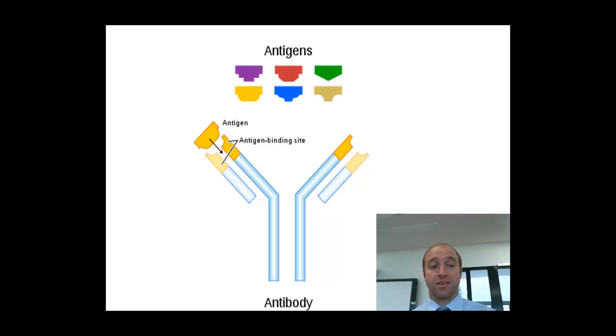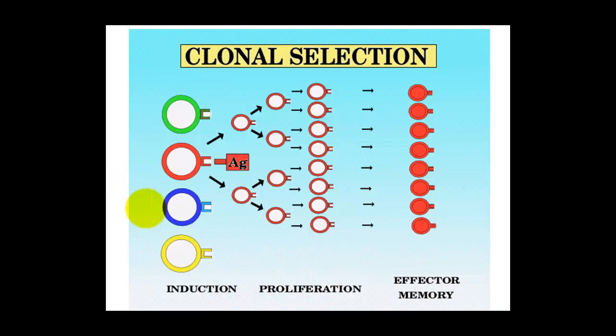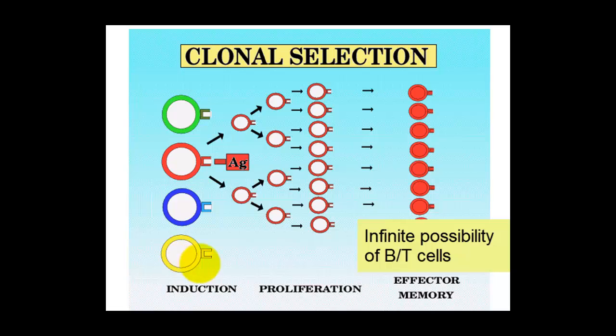So let's have a look at how this applies to clonal selection. When we have a look at clonal selection, the very first bit to start with is that we've got an infinite possibility of B and T cells, each with their different shapes. If you can imagine these being cells, and each one having a specific shape.